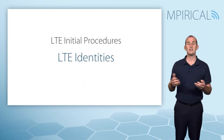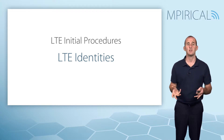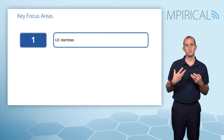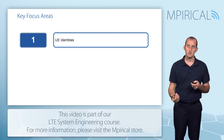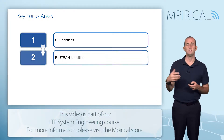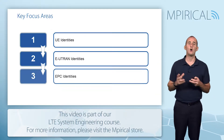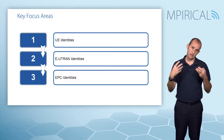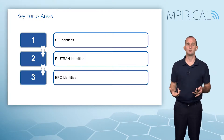On an end-to-end basis in LTE, a large number of different identities are actually utilized. These are identities associated with the user equipment and the subscriber, but also identities found in the radio access network and the core network. In this session we're going to explore those different identities that are encountered.